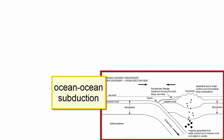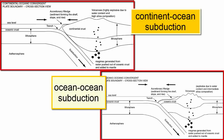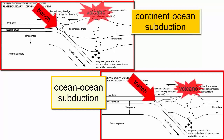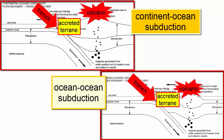Ocean-ocean subduction zones produce the same types of features as continental-ocean subduction zones: trenches, volcanoes, and accreted terrain material that forms coastal mountain ranges. The only difference is that the volcanoes erupt through thinner oceanic lithosphere, making them slightly less dangerous. The thicker the lithosphere, the more likely gas content will increase in the magmas, leading to higher pressures and more explosive volcanoes.